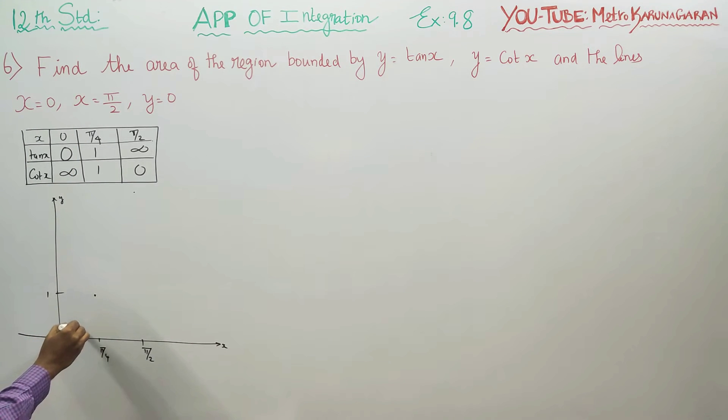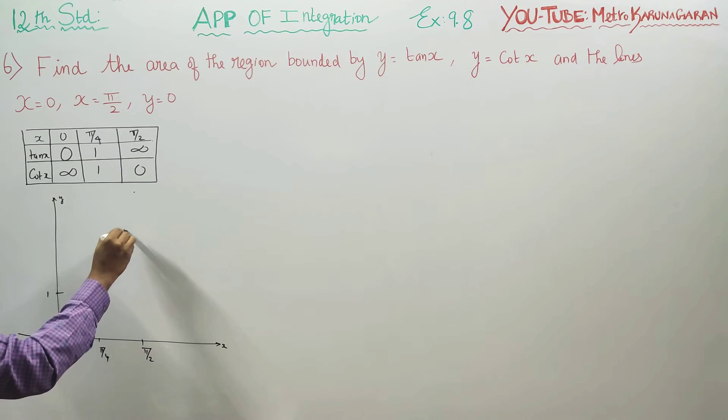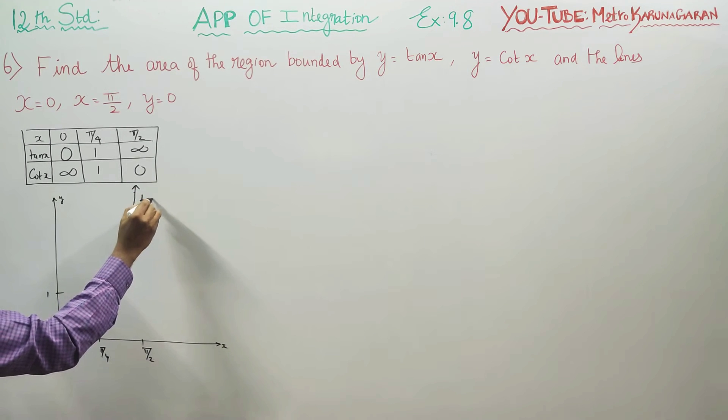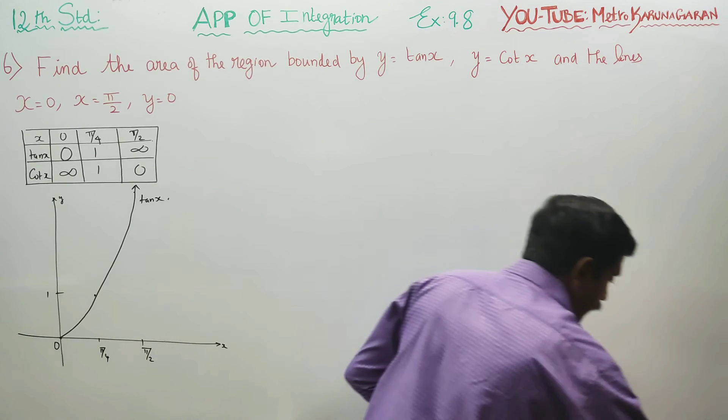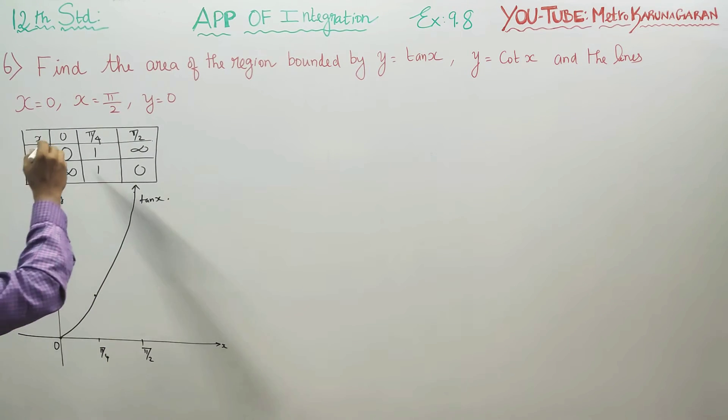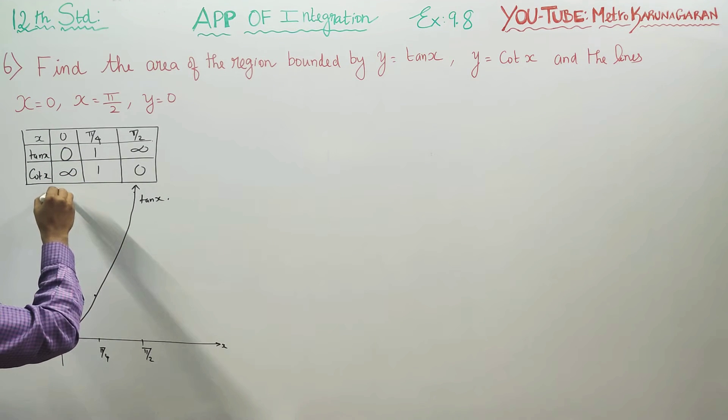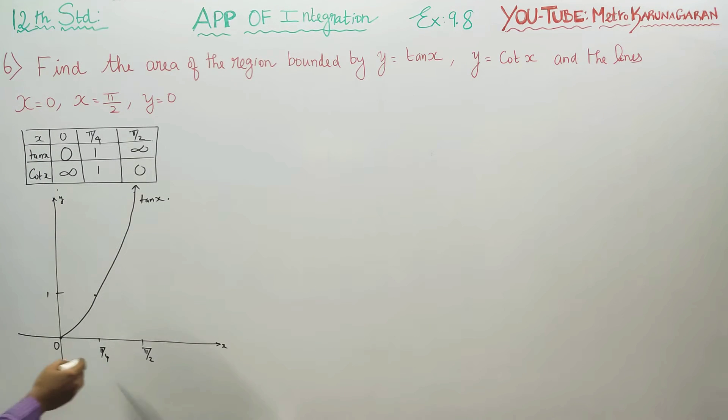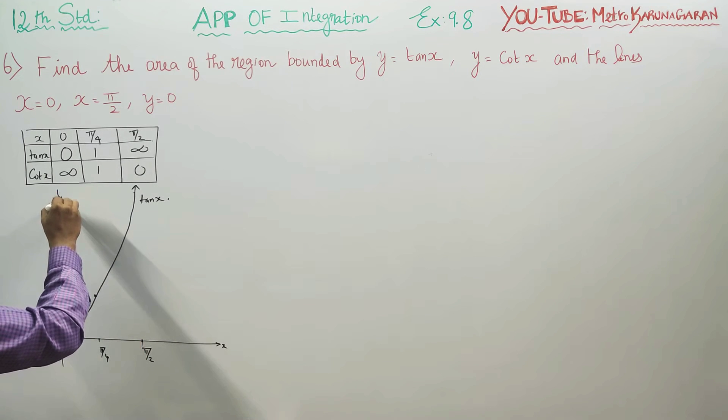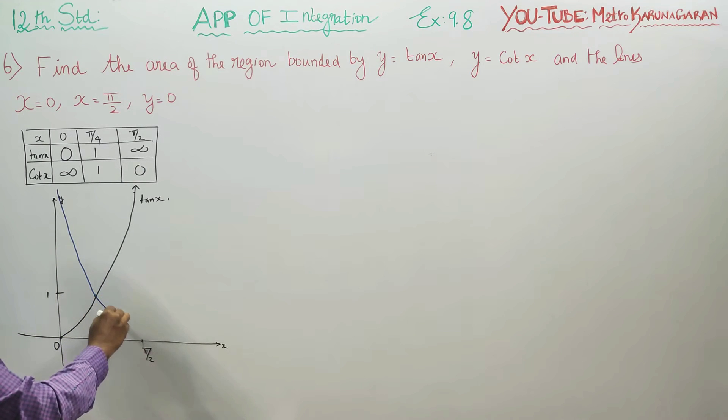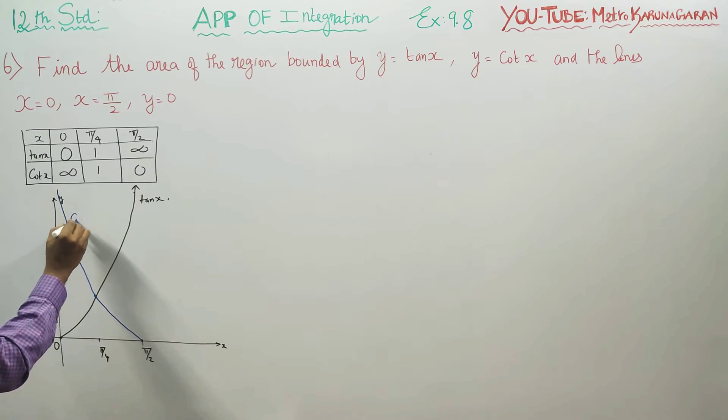This is your tan x curve. I am coming to cot. Cot 0 is infinity, you start drawing a point at infinity. Cot 45 is one, same point. Cot 90 is zero at the end. Now this is my cot x. Tan x goes zero to infinity, cot x goes infinity to zero. They meet at 1.